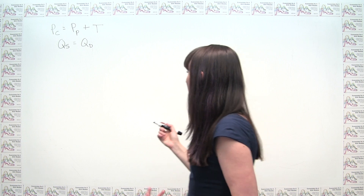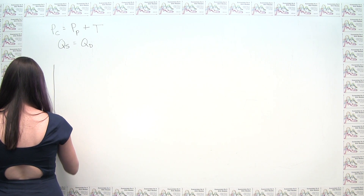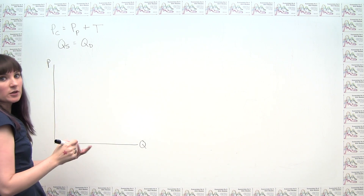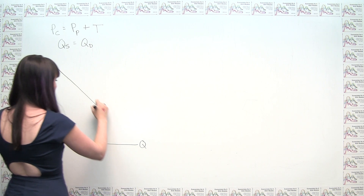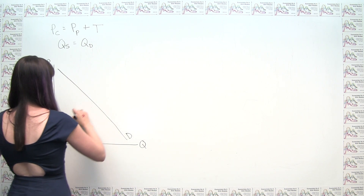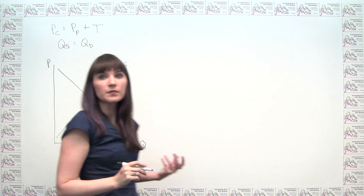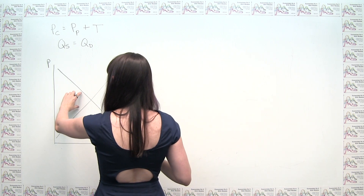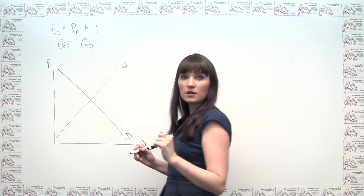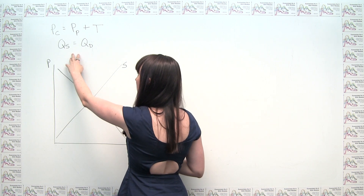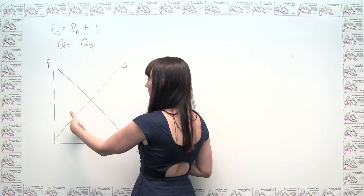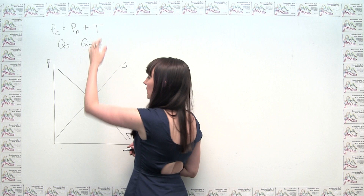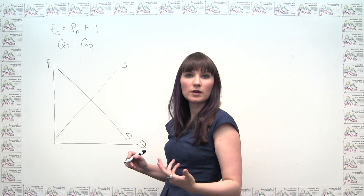If we make a supply and demand diagram with Q on the horizontal axis and P on the vertical axis — a downward sloping demand curve and an upward sloping supply curve — we're looking for the place where the same quantity appears on both curves, but where there's a wedge of amount T between the price to the consumer and the price to the producer.